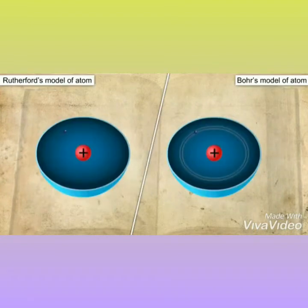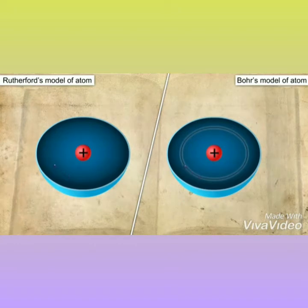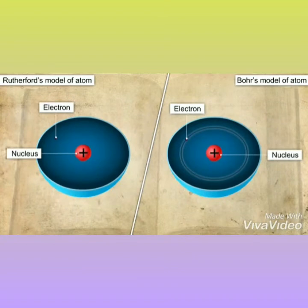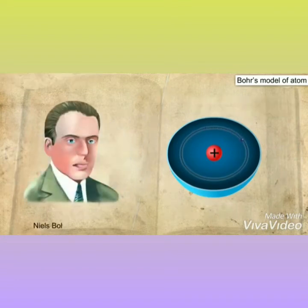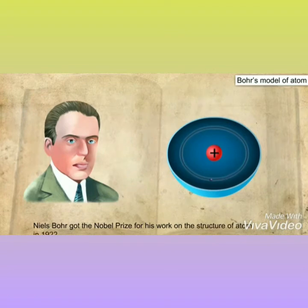The final model of Niels Bohr is similar to the Rutherford model of an atom, which states that the atom has a positively charged center around which electrons revolve. The only difference in the Bohr model is that electrons revolve around the nucleus in fixed orbits with fixed energy. For this work on the structure of the atom, he received a Nobel Prize in 1922.